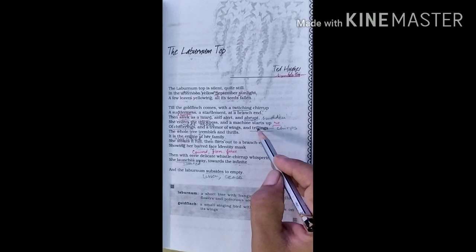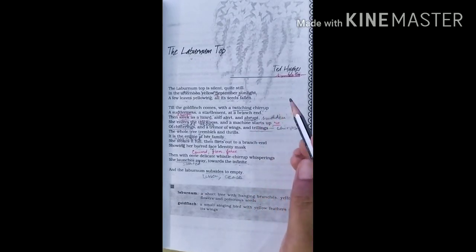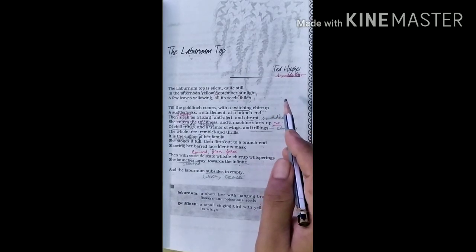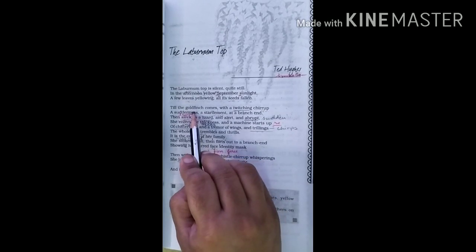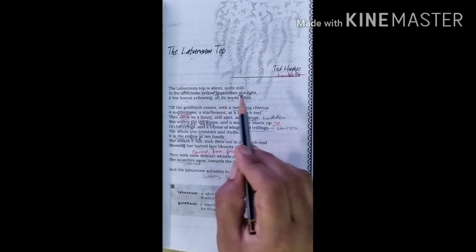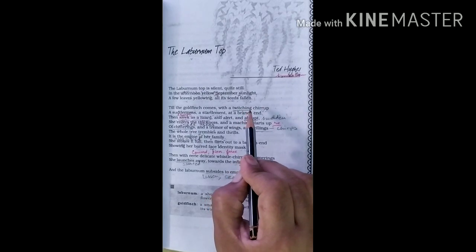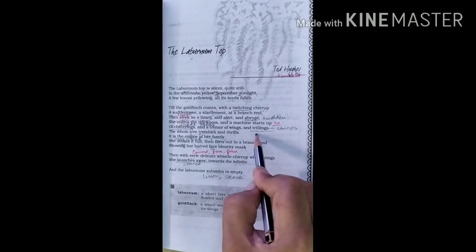Next one is metaphor where we use indirect comparison. Generally quality is comparable. She enters the thickness. She means goldfinch. When the goldfinch enters the thickness and machine starts up, here the noise created by the movement of the bird is compared to the machine's engine. So there metaphor is used.